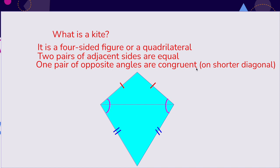It also has one pair of opposite angles that are congruent. It's on the shorter diagonal, so those opposite angles are congruent, but the top and bottom angles between the congruent sides are not congruent. Just keep that in mind.